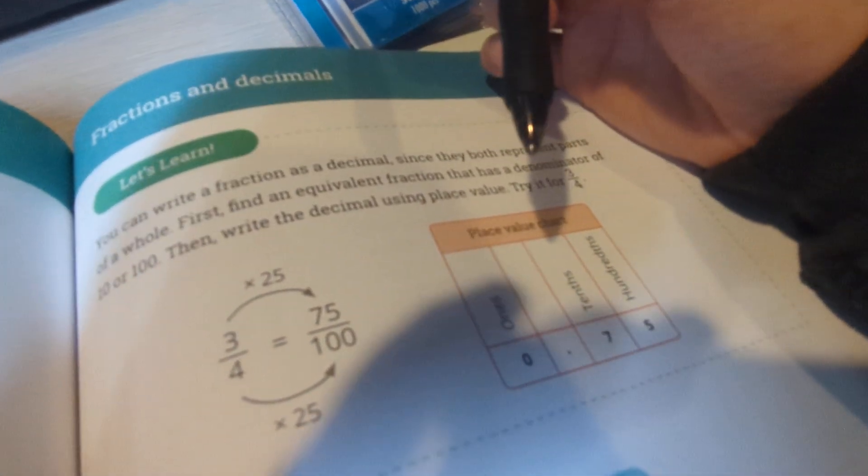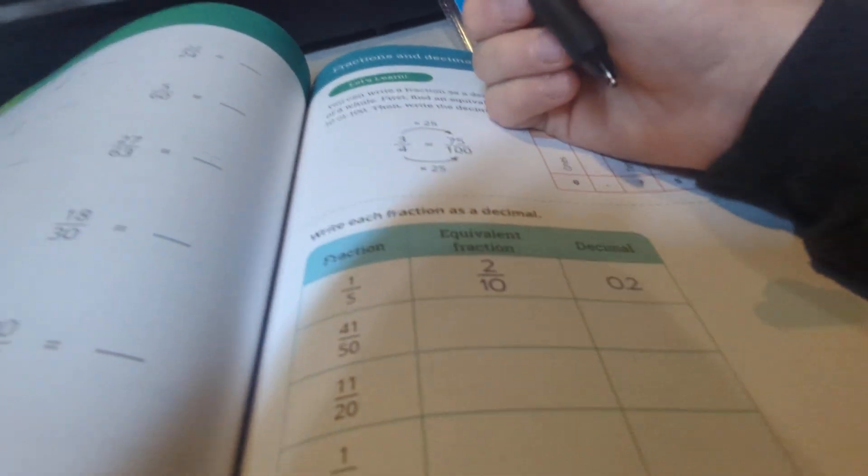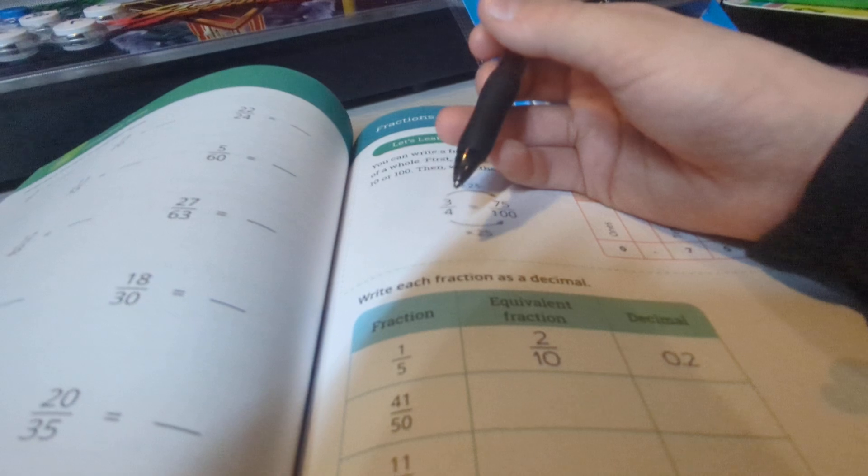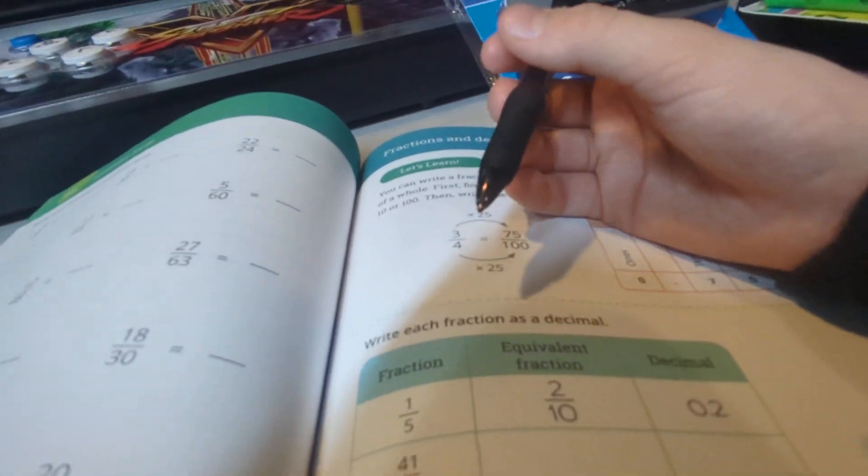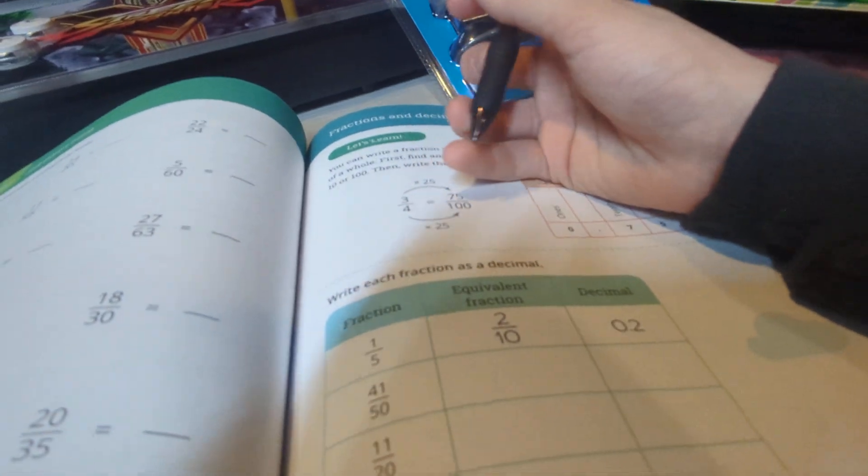Try it for 3/4. So see how we multiplied it by 25? He didn't just multiply it by 2 to give him 8 or 3 times 2 to give him 6.